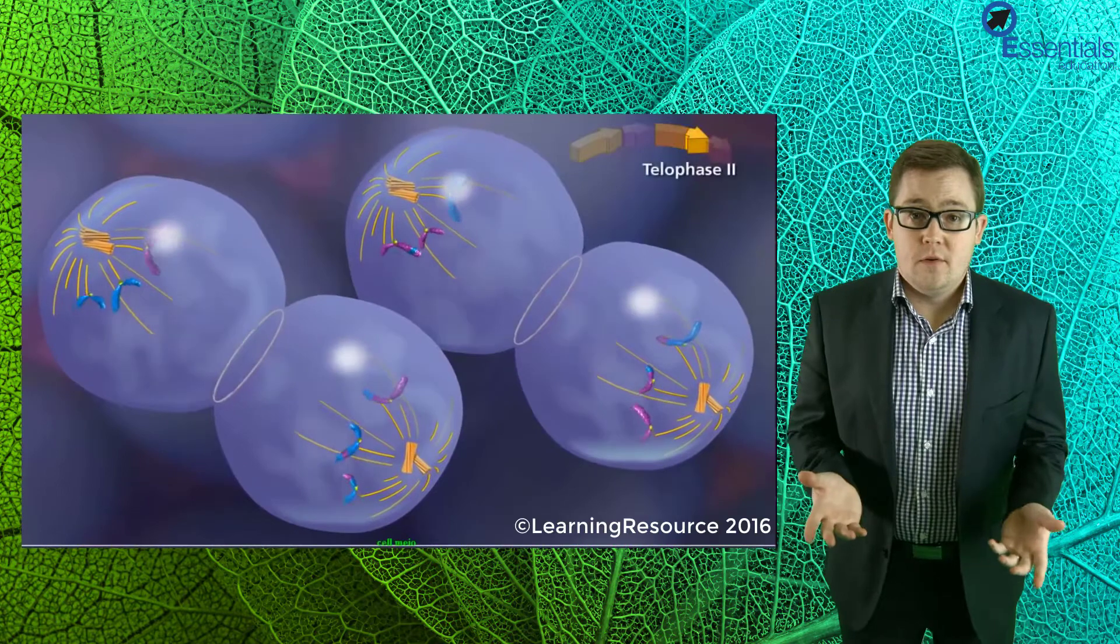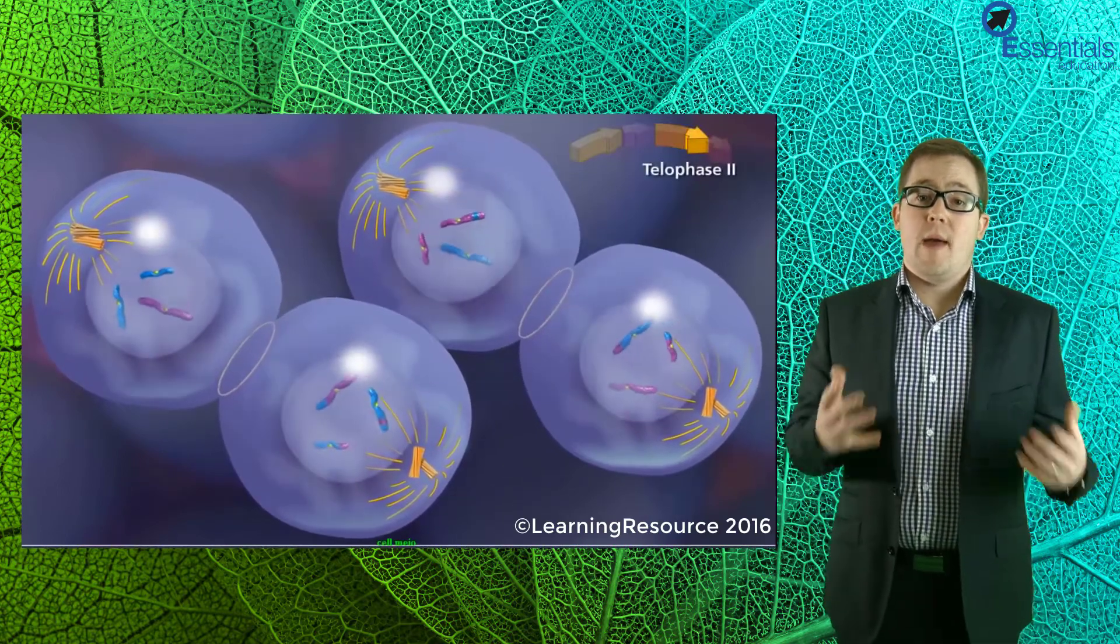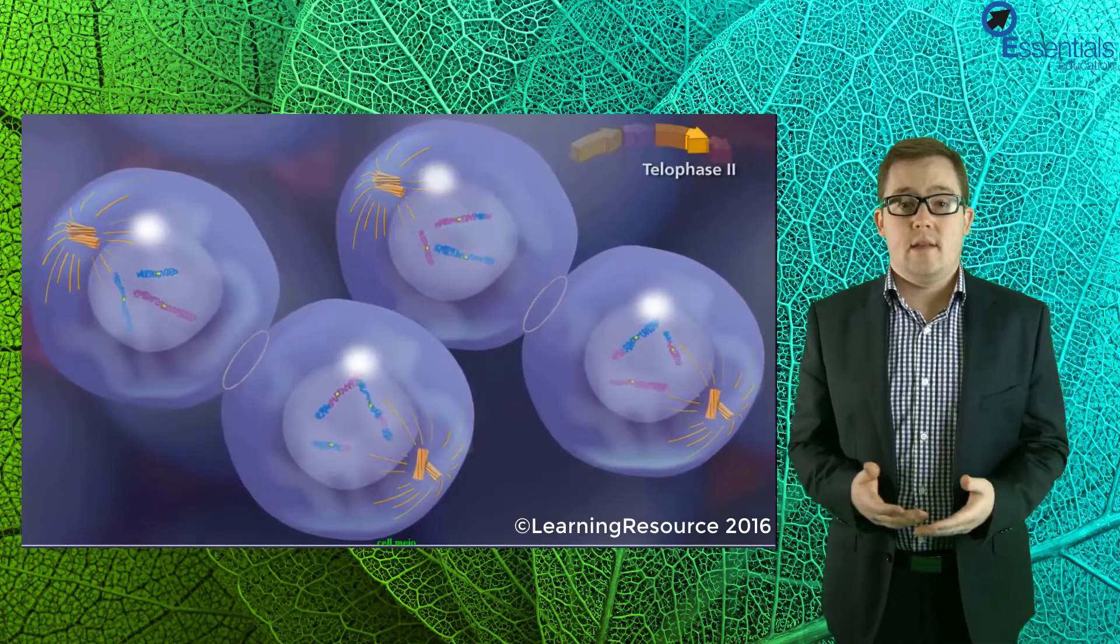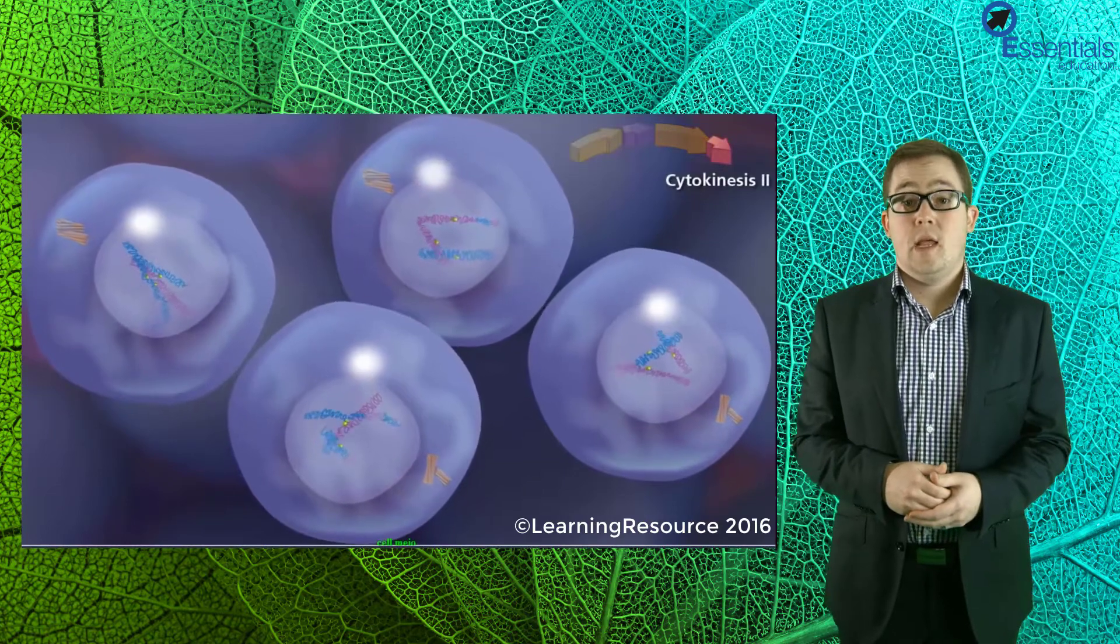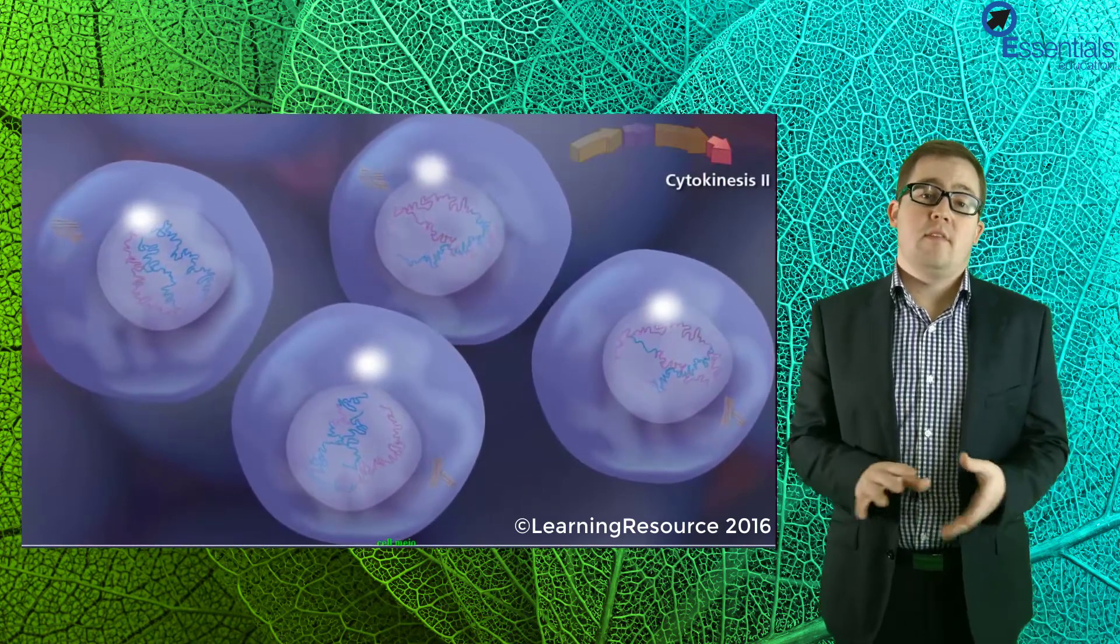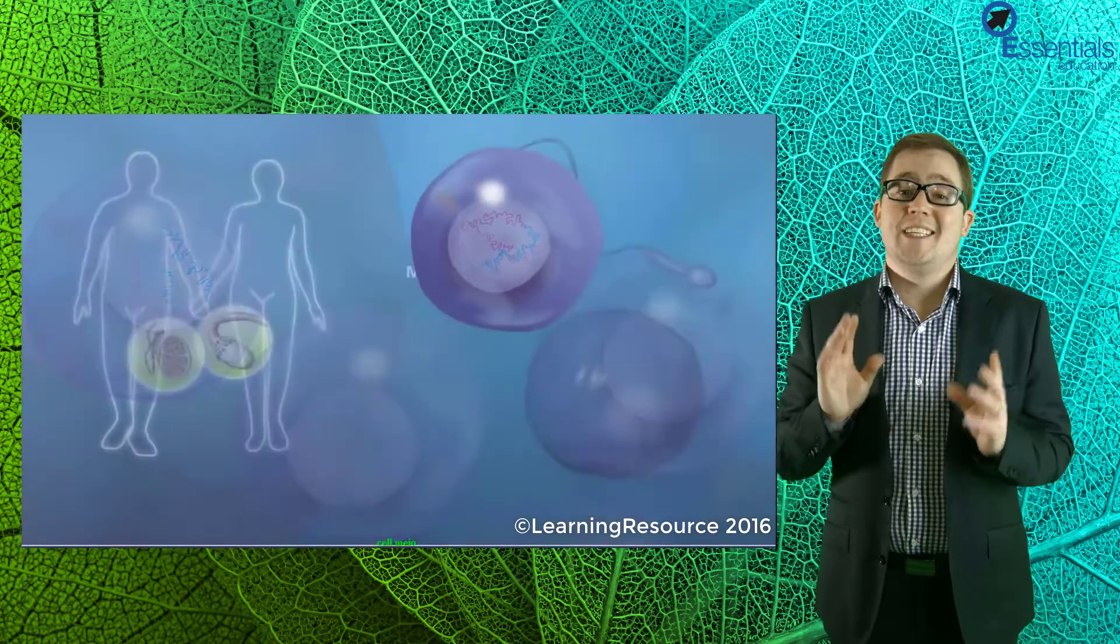And in telophase II, new nuclear membranes form around the chromosomes, the cell elongates and then separates. The overall result of meiosis is four haploid cells, all of which are genetically different.